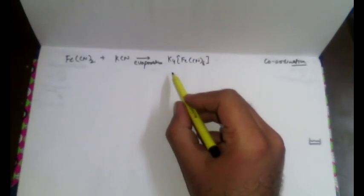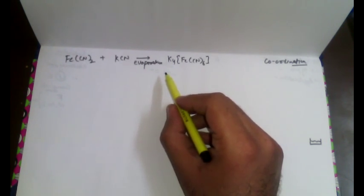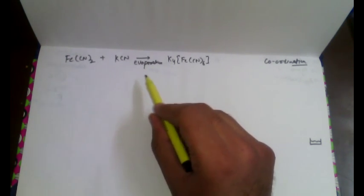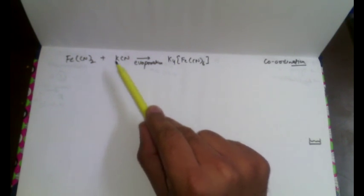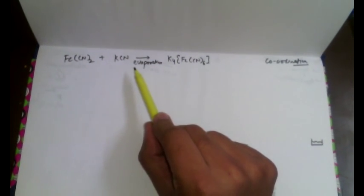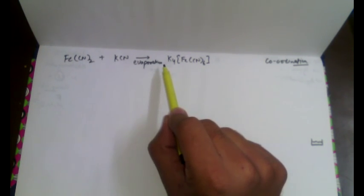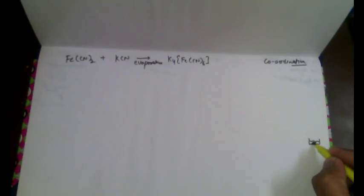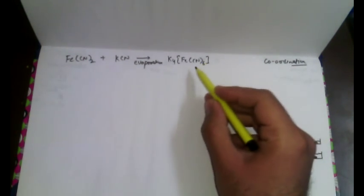These compounds are difficult to learn, but you need to understand the nomenclature as we will discuss later in this chapter. First of all, look at this example: we take two salts — ferrous cyanide and potassium cyanide — in aqueous solution, mix them in a beaker, evaporate to dryness, and the residue left behind is known as potassium ferrous cyanide.